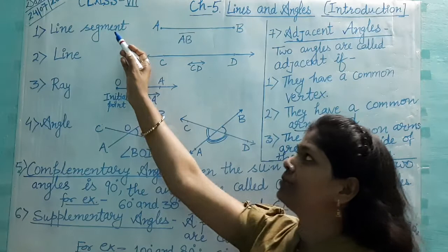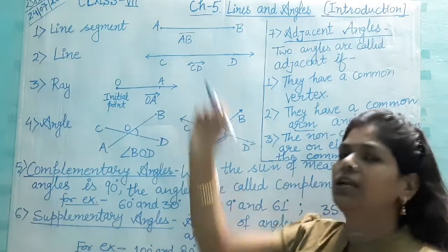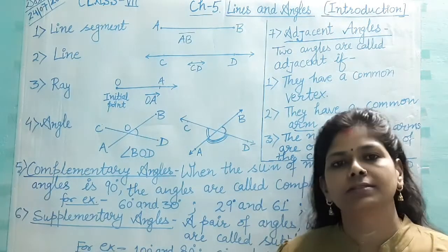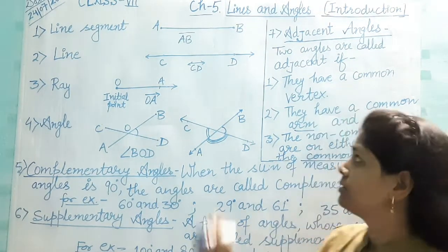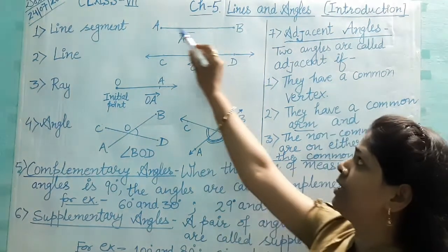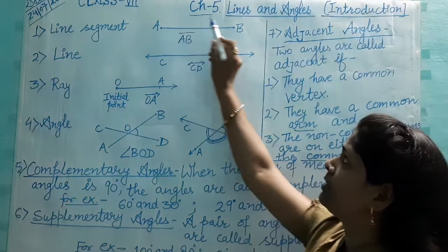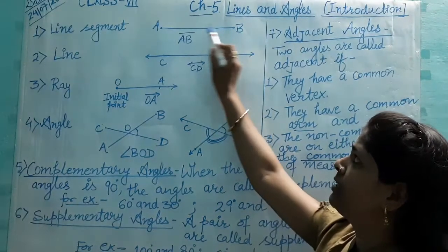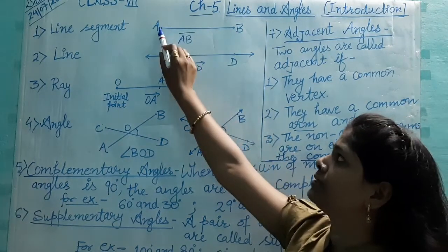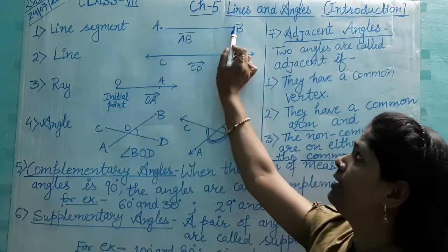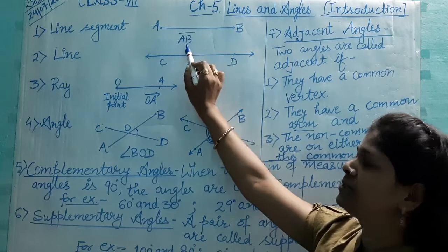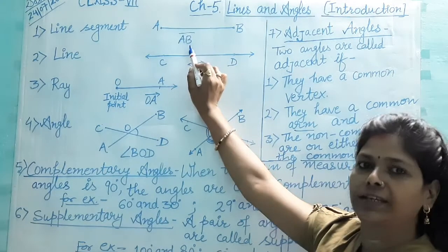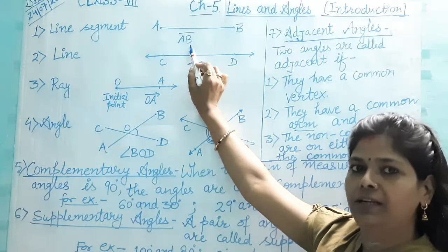Line segment. Every line segment has two endpoints. This is a line segment AB. It has two endpoints, A and B, and is represented as line segment AB.